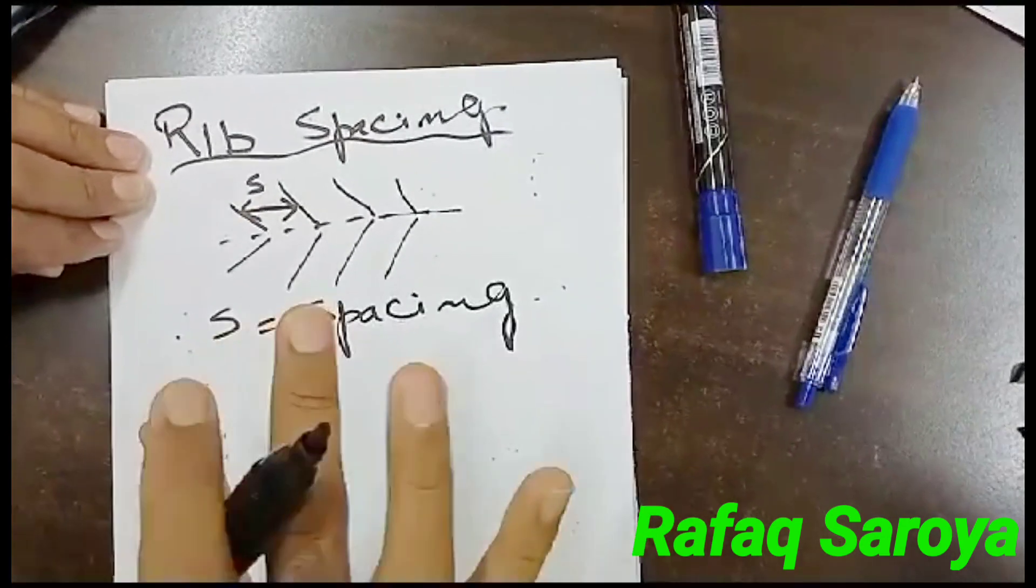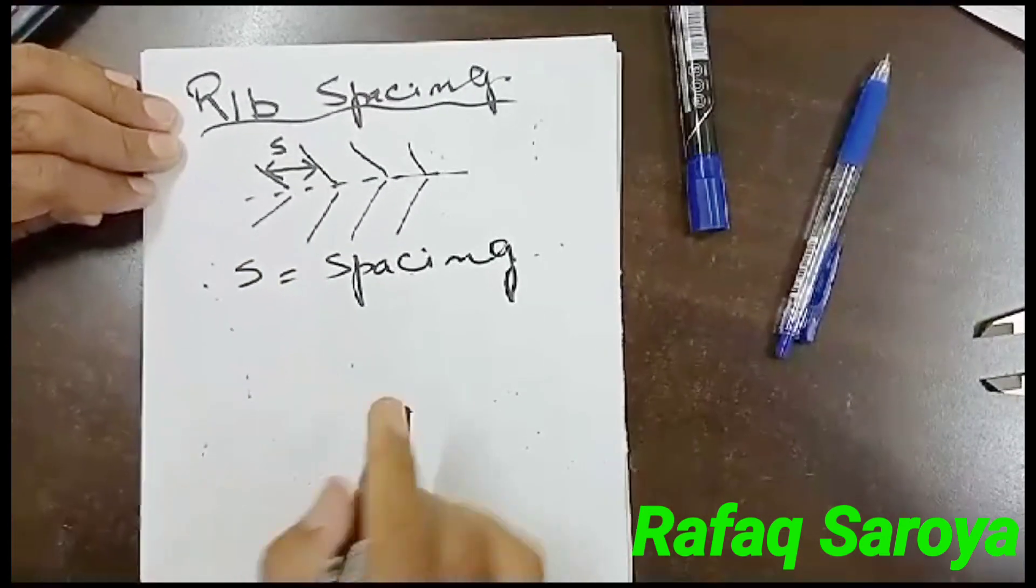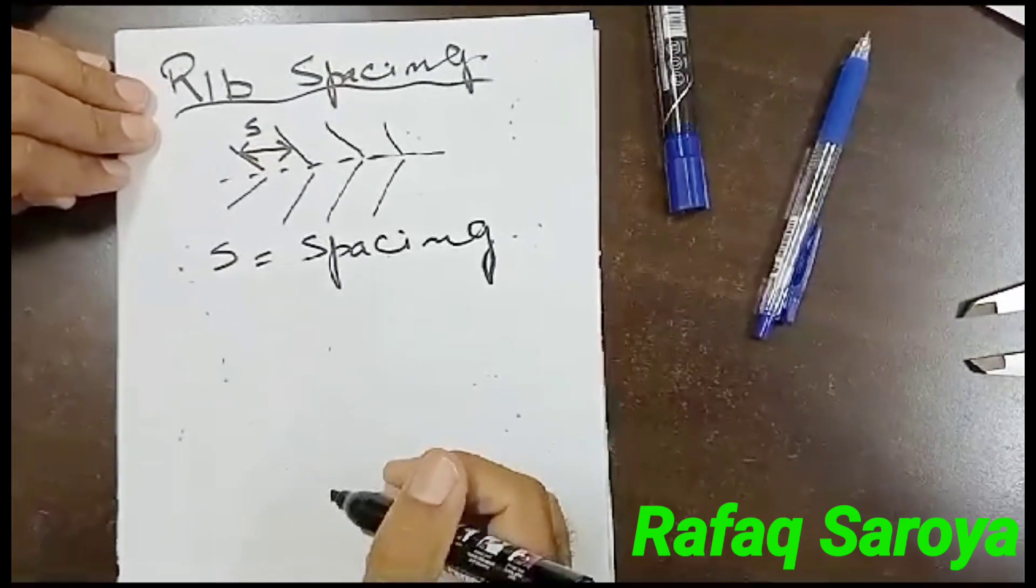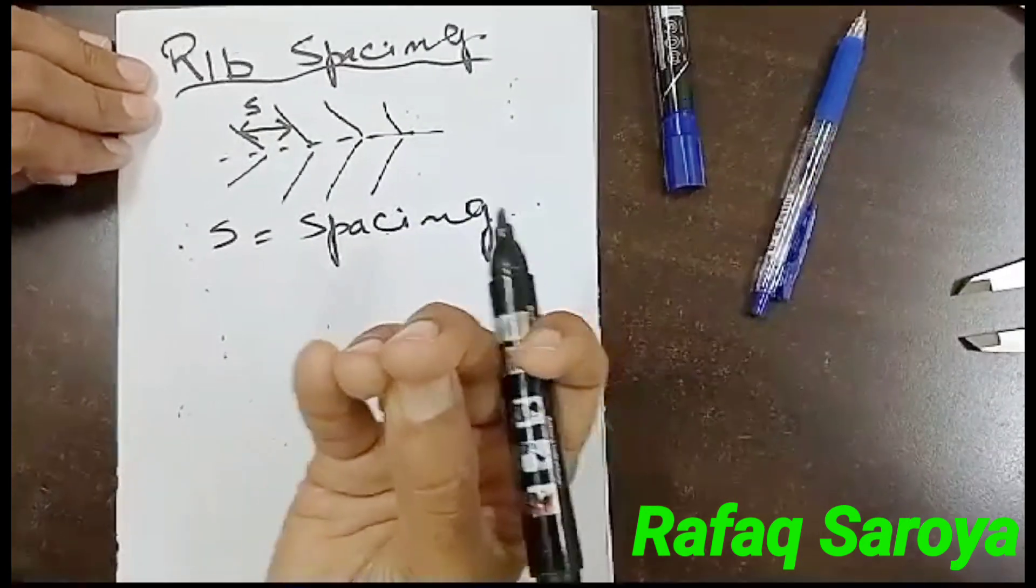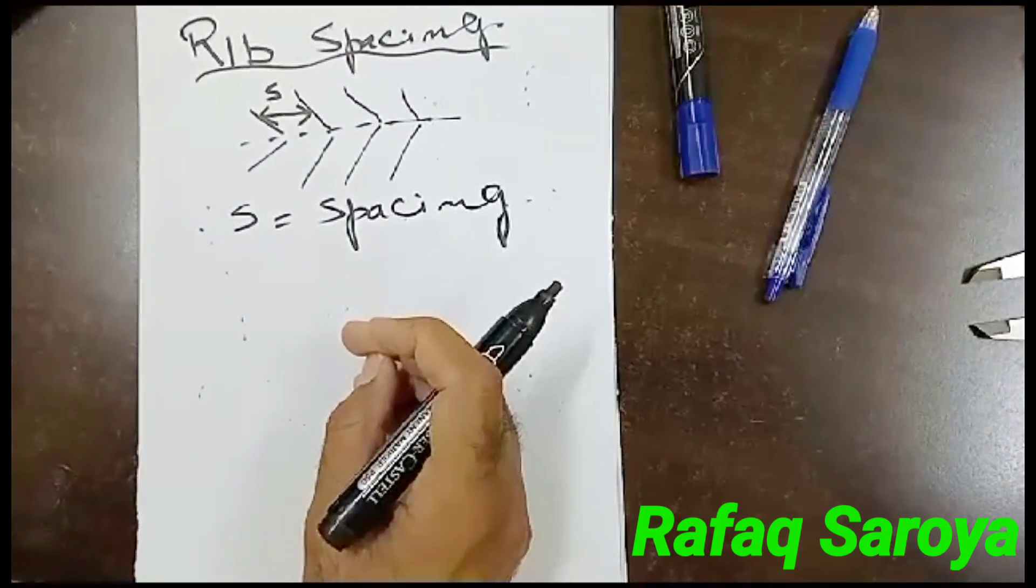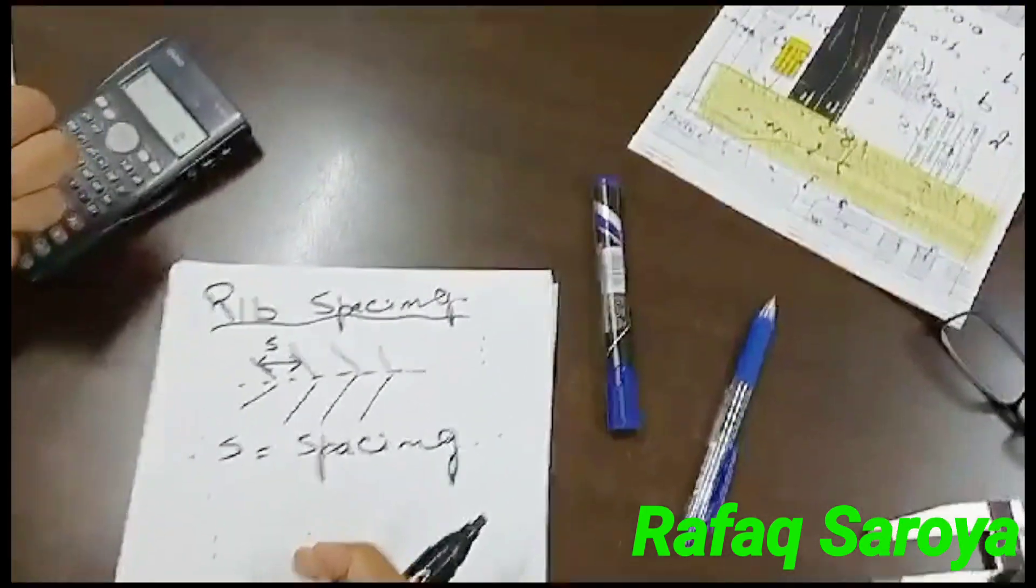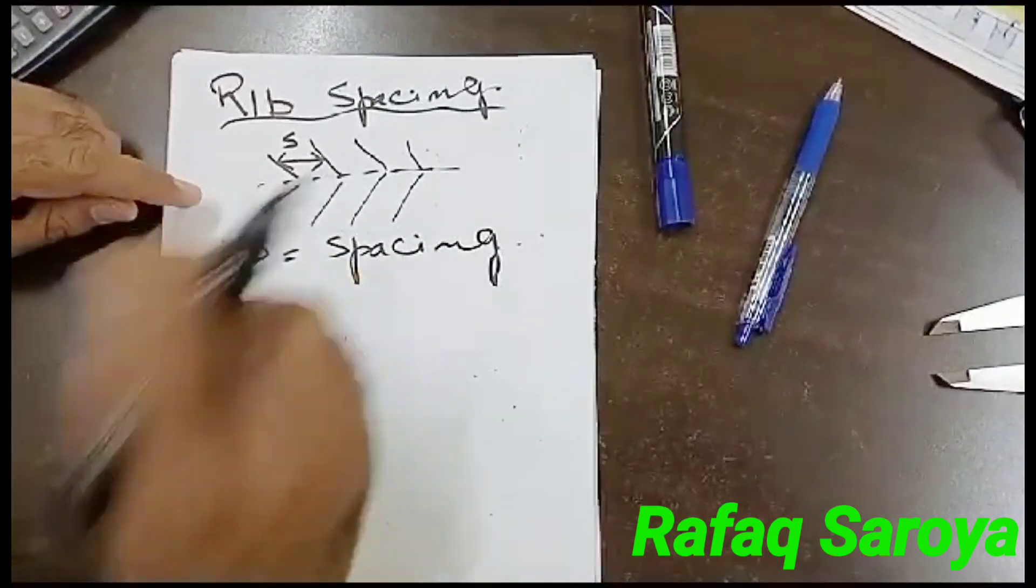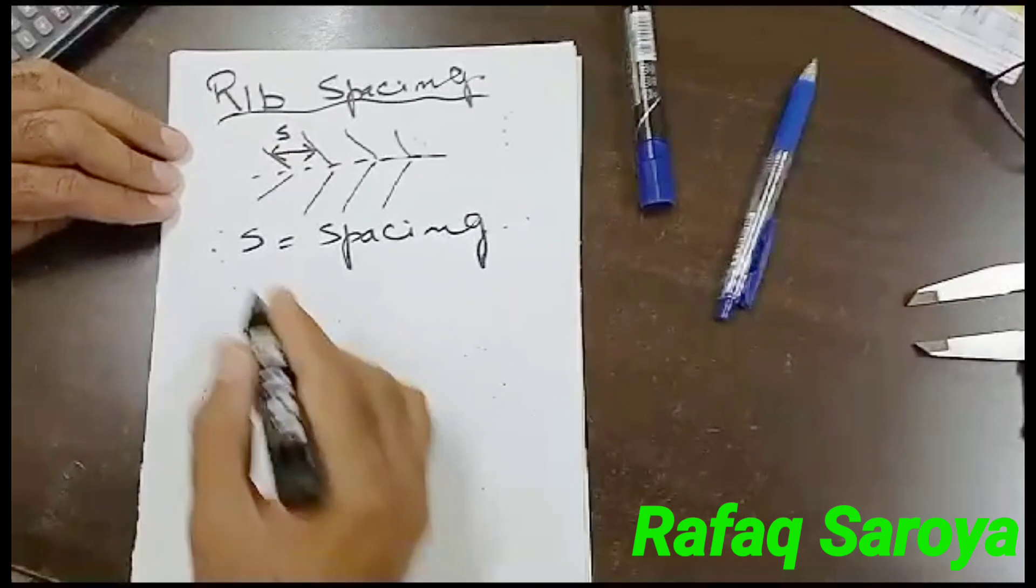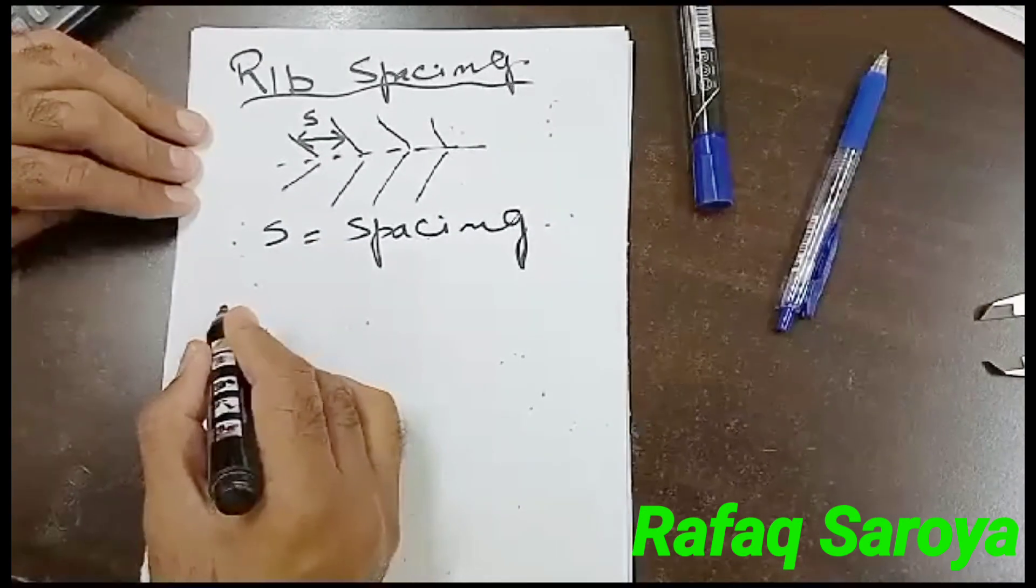And the question is, is it a constant? Its answer is no. It's not a constant, it will vary. It depends upon the company who is manufacturing the steel bar, how much spacing they have provided between each of these ribs. And this spacing also depends upon the diameter.